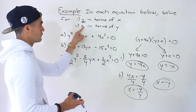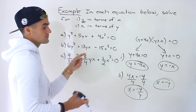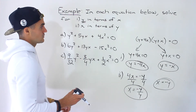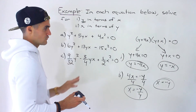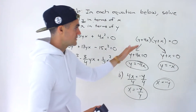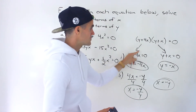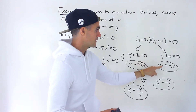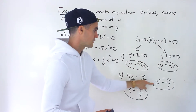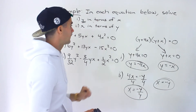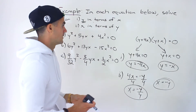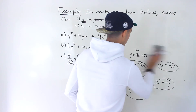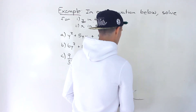So just be really careful — usually they'll ask for only one of these, sometimes maybe both. Really understand what they're asking for. But the same process applies: you factor, then find when the factors equal zero, and whichever variable you isolate depends on what they're asking for in the question. That's pretty much how you do these kinds of problems. Let's do part b.